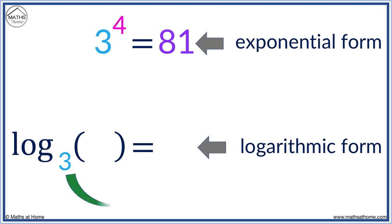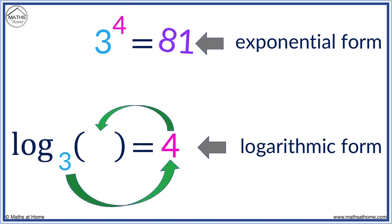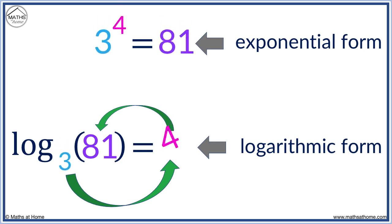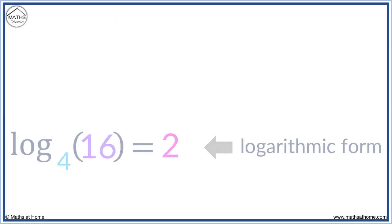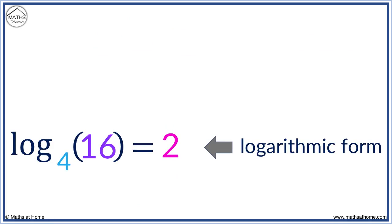Here is 3 to the power of 4 equals 81. Written in logarithmic form: log base 3 of 81 equals 4.